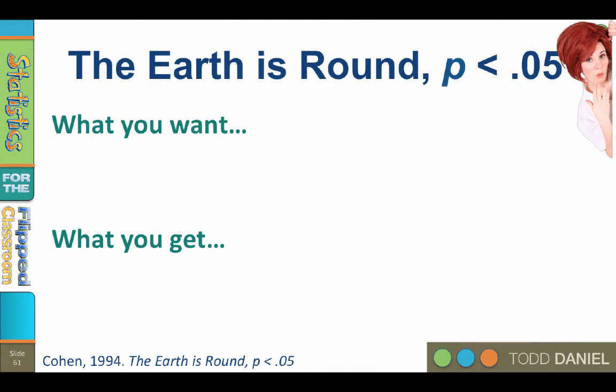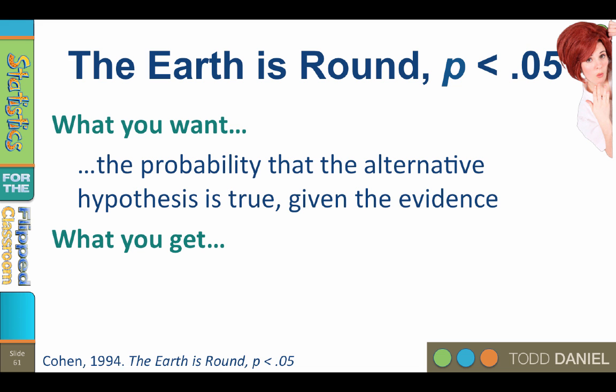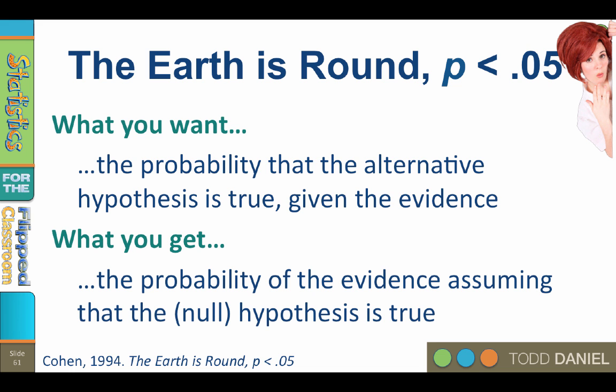We need to think about what Jacob Cohen wrote in an article titled, The Earth is Round. What you want to know when you do hypothesis testing is the probability that the alternative hypothesis is true, given the evidence. Did the treatment have an effect? What you get, however, is the probability of obtaining this evidence, assuming that the null hypothesis is true. If the treatment really did work, then how likely is it that we would have found these results?